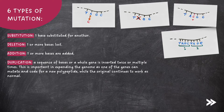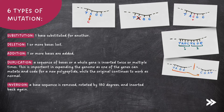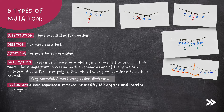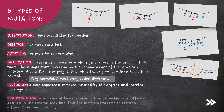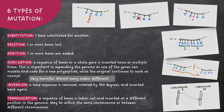In inversion mutations, a base sequence is removed, rotated by 180 degrees, and inserted back again. Note that inversion mutations are very harmful, as almost every codon is different, so the polypeptide produced will be completely different and almost certainly dysfunctional. Finally, in translocation mutations, a sequence of bases is taken out and inserted at a different position in the genome. This may be within the same chromosome, or between different chromosomes.